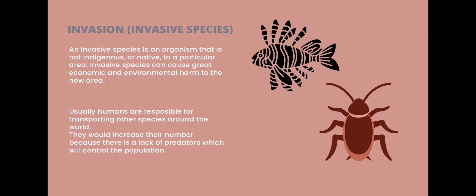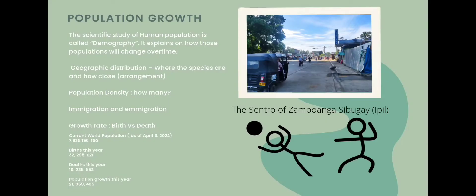Population growth — the scientific study of human population is called demography, which explains how populations change over time. The increased number of people in a population or dispersed group can cause an imbalance between growth and death. Geographic distribution refers to where species are and how close they are to each other.